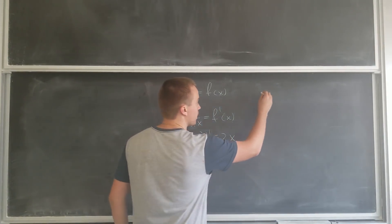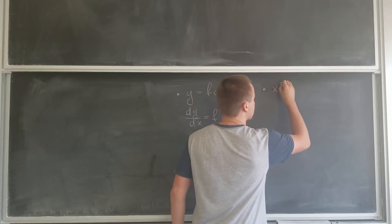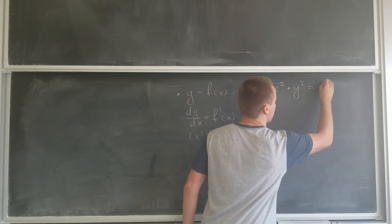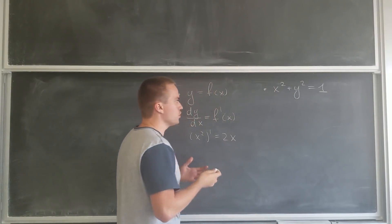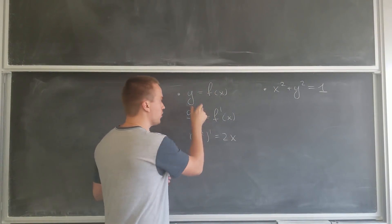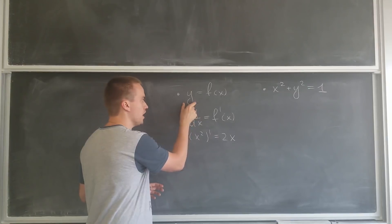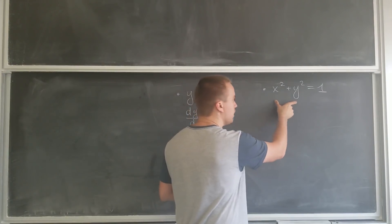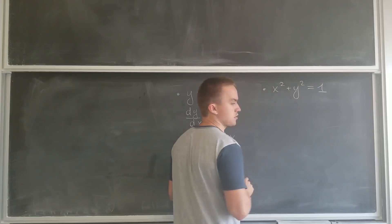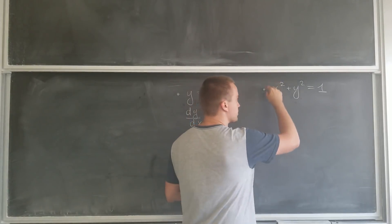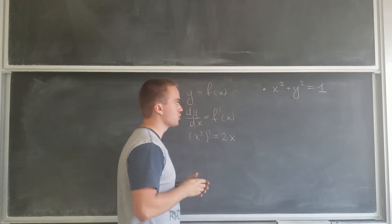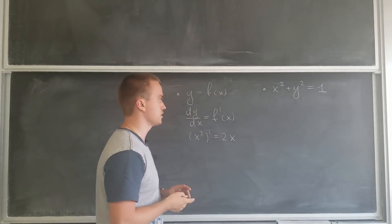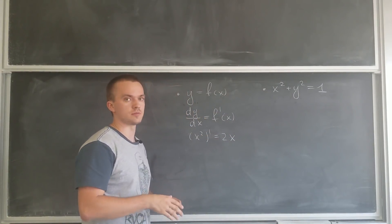But what if I have an example of x squared plus y squared equals 1? What should I do in this case? Here we can see that our function y is not expressed in terms of x — this expression is not actually a function. So what should I do if I want to find the derivative for this expression? In this case I want to use implicit differentiation.